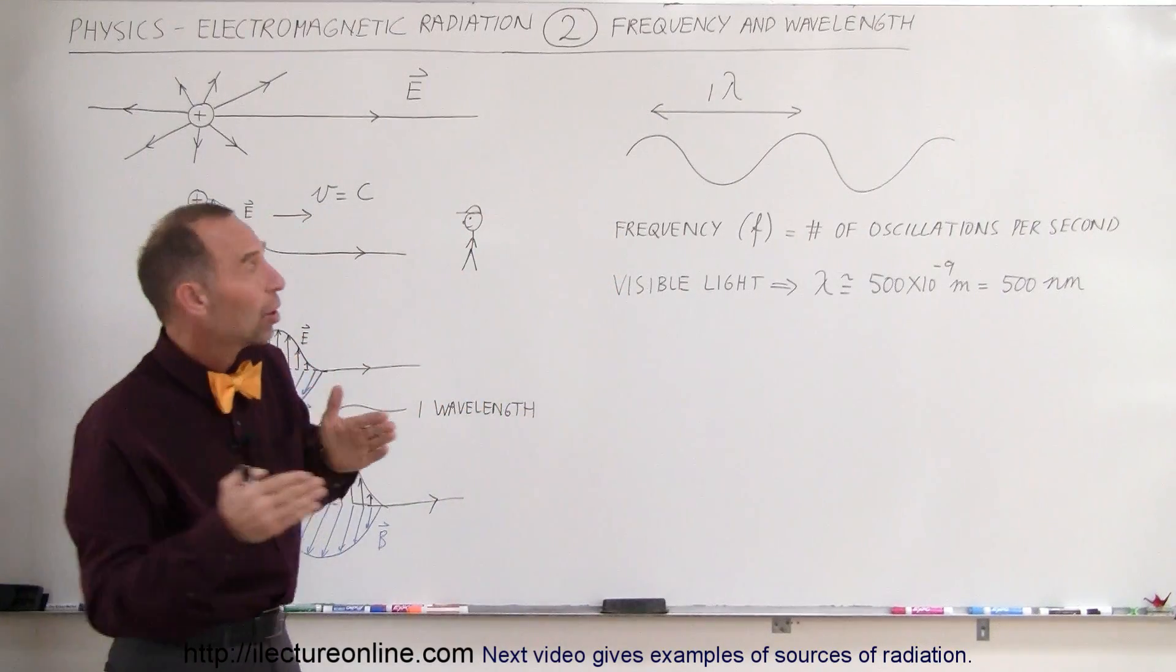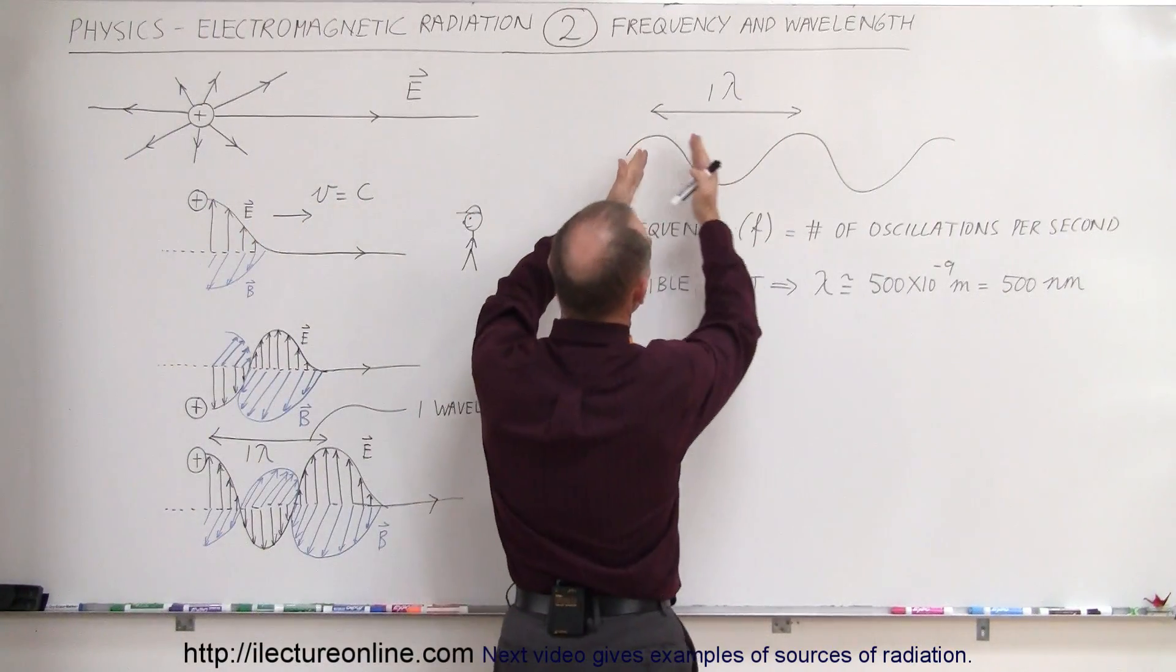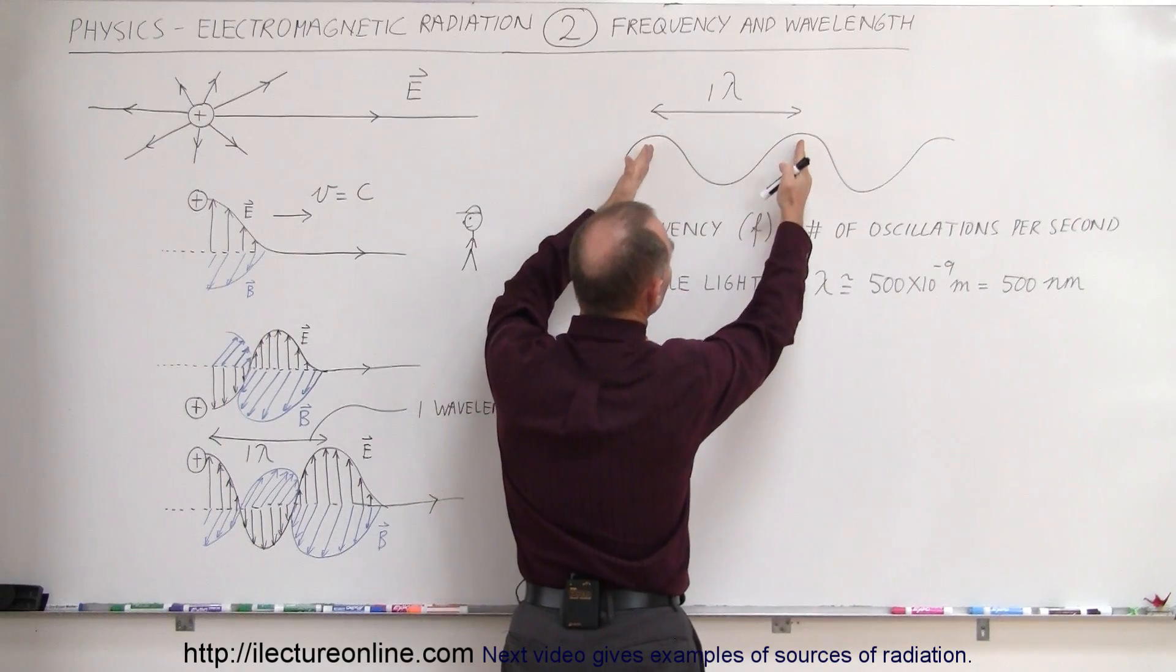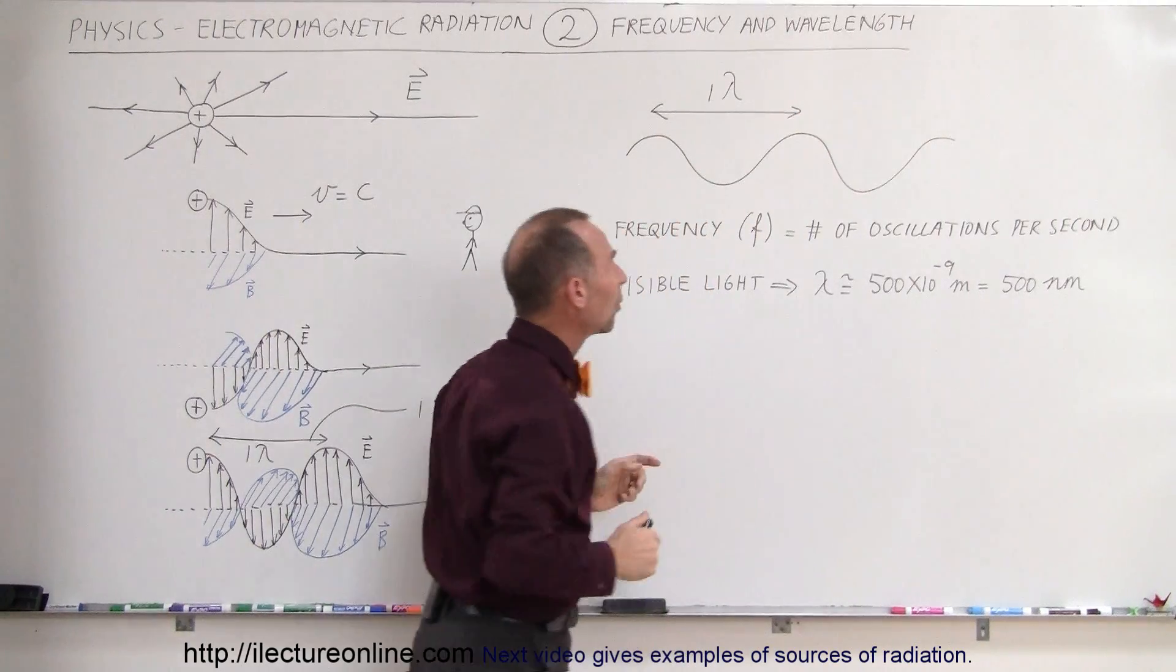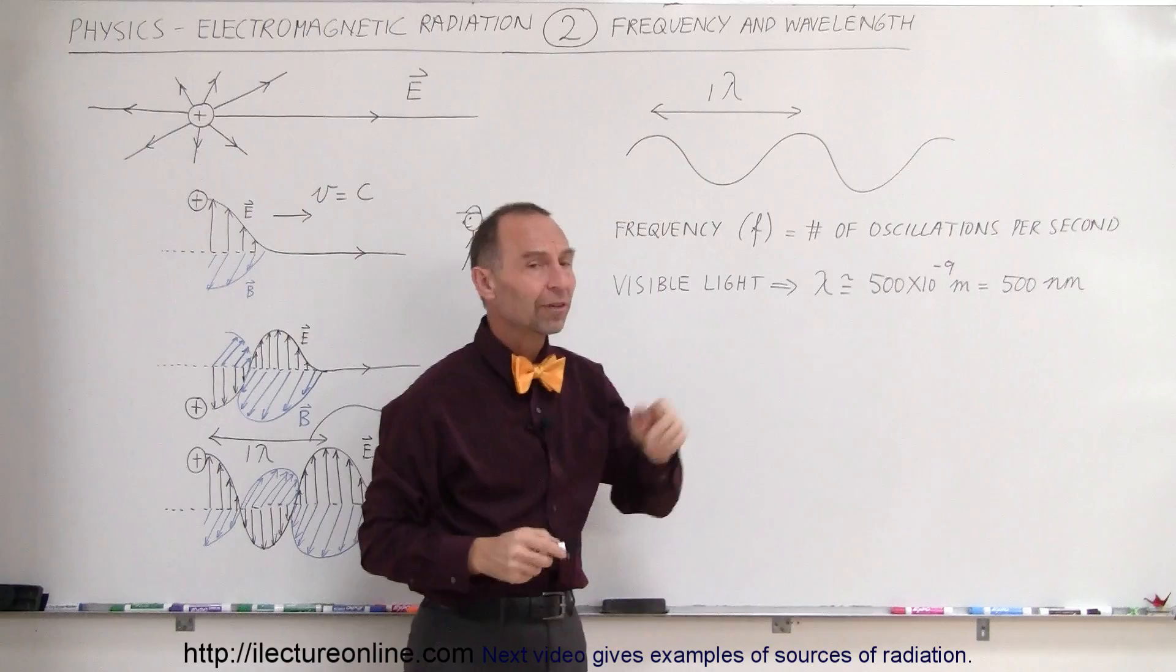And every wave has what we call a wavelength. It's a distance from the peak of one wave to the peak of the next wave. That's called a wavelength. We use the letter lambda to indicate wavelength.